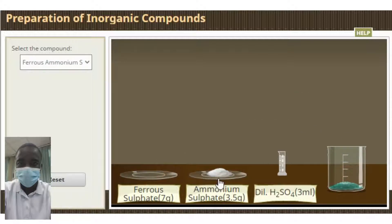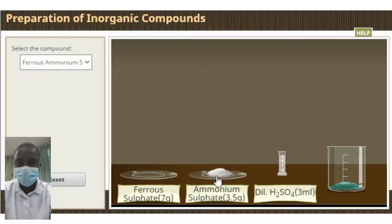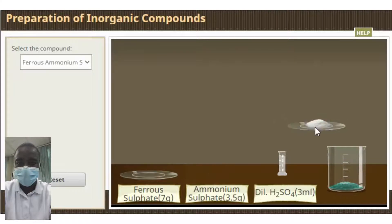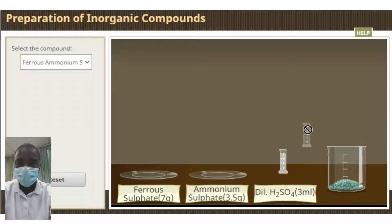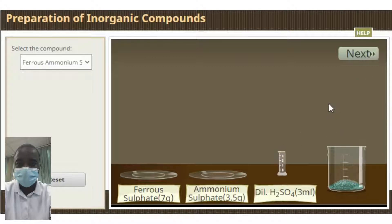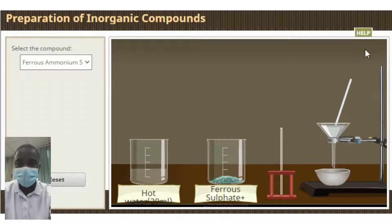What are the different types of inorganic compounds? There are many different types of inorganic compounds, each with their own unique properties and uses. Inorganic compounds can be classified into several different categories, depending on their composition and structure. The most common types of inorganic compounds include complex compounds and double salts.